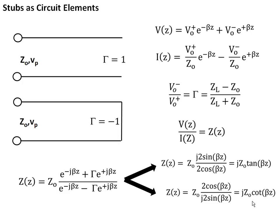So how does this work? We remember that we have stubs, and these are sections of transmission lines that are either open-circuited, so the reflection coefficient is 1, or short-circuited, so the reflection coefficient is minus 1.